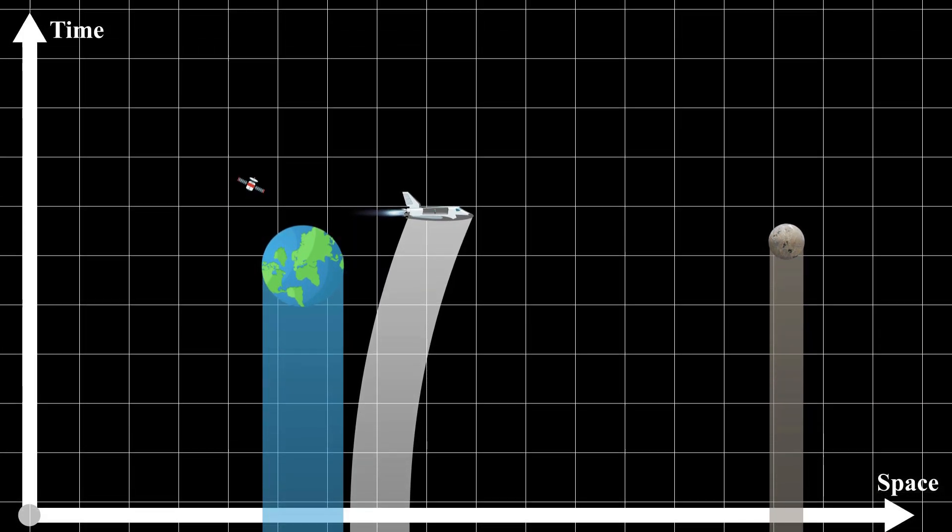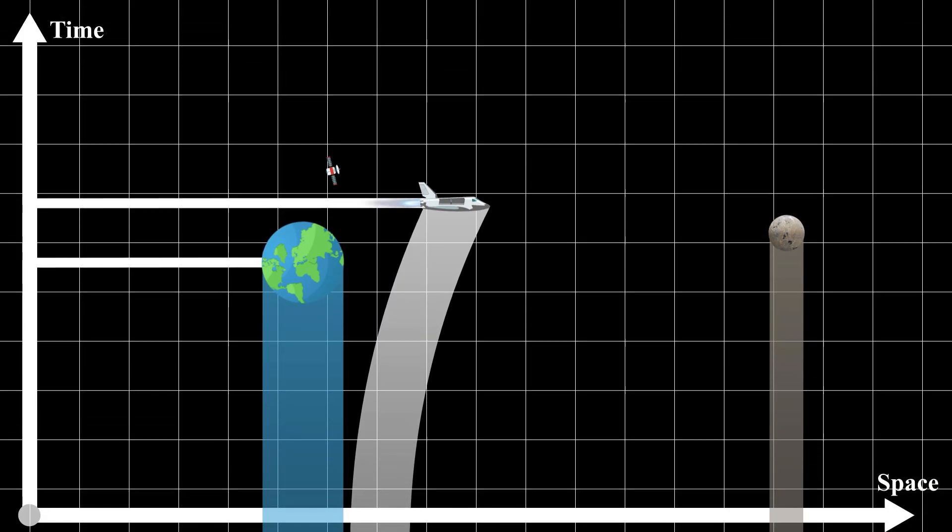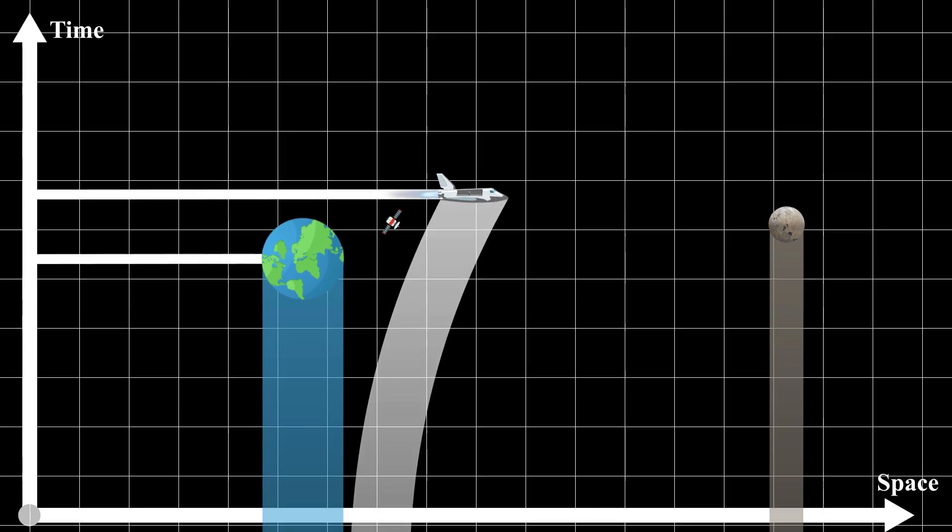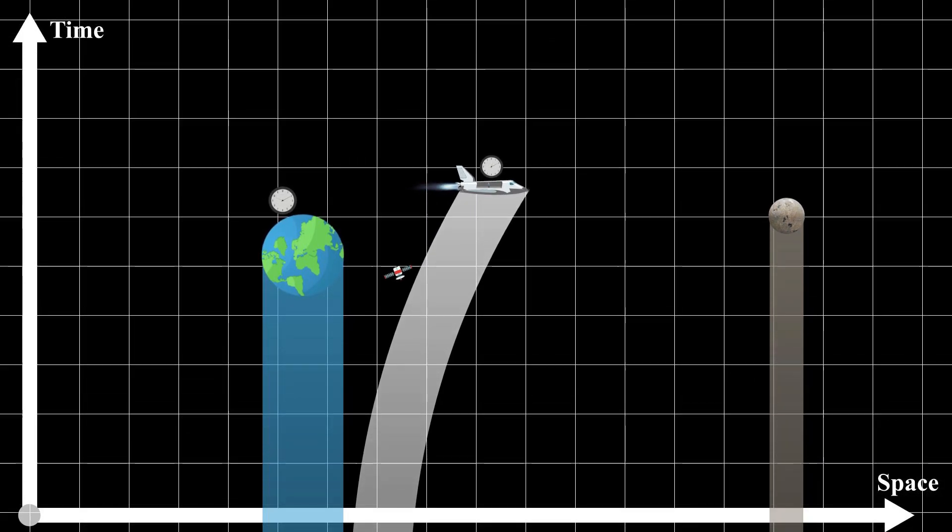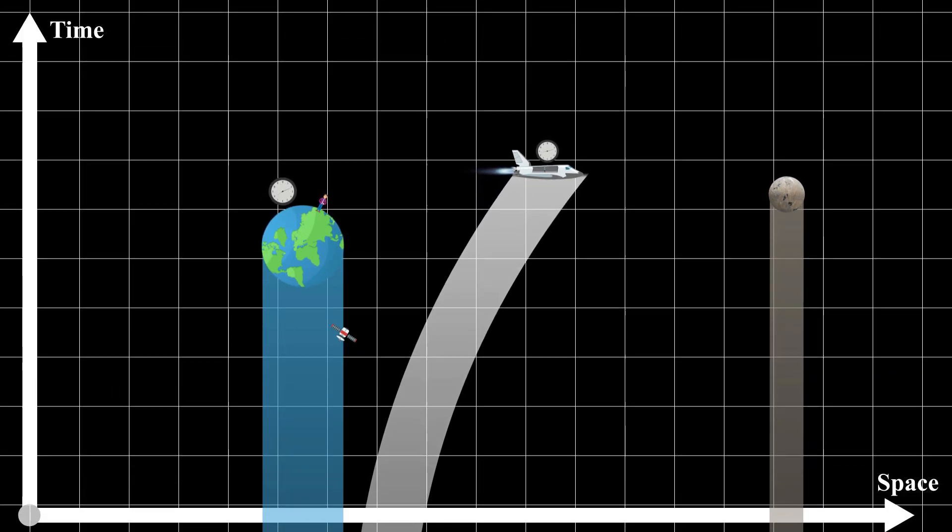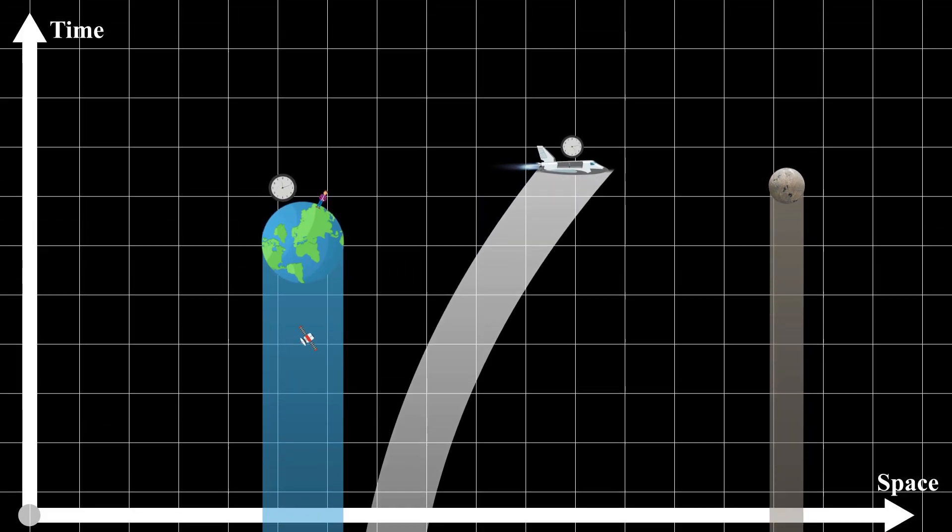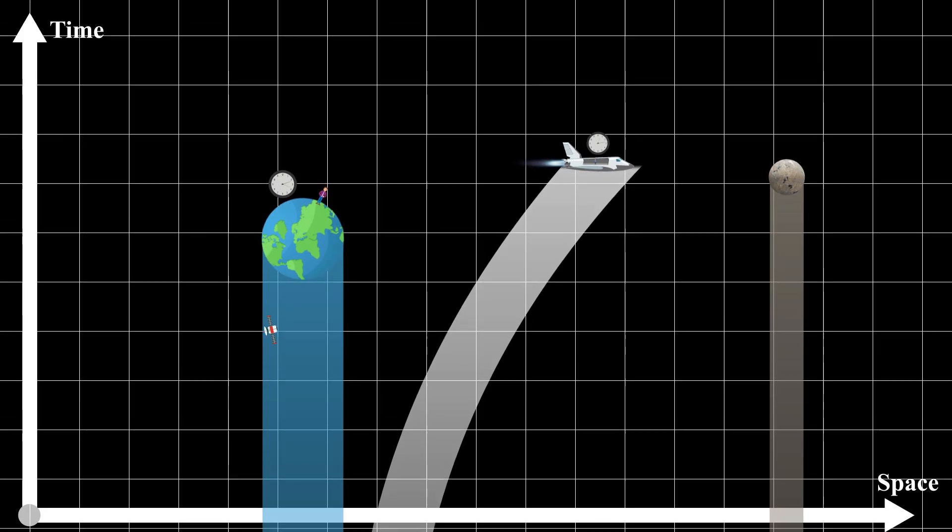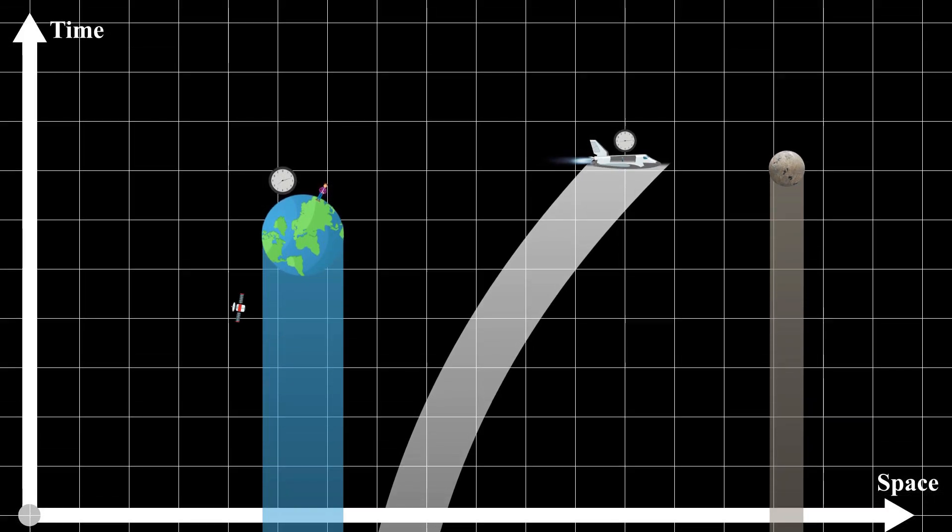Due to time dilation, clocks on moving objects slow down relative to stationary observers. Thus, it is Earth's clock that appears to run slower. If this astronaut has a twin brother who stays on Earth, the astronaut would perceive his brother aging more slowly and becoming younger relative to him.